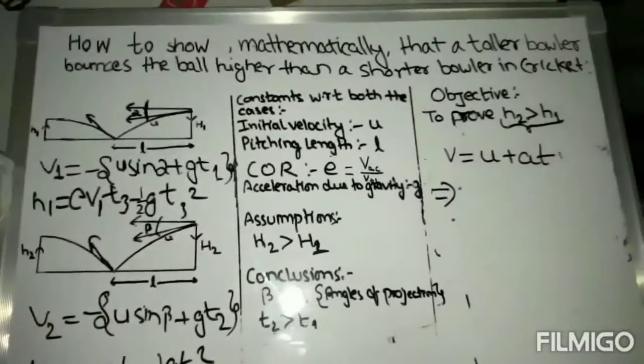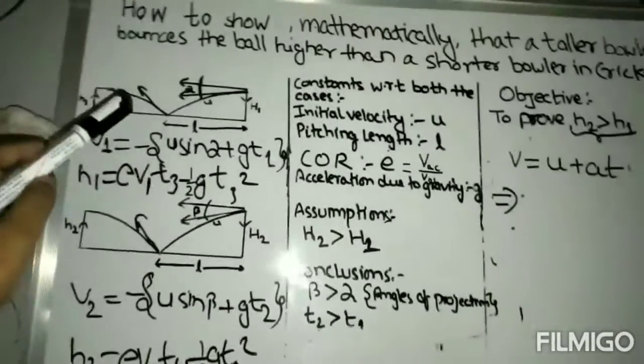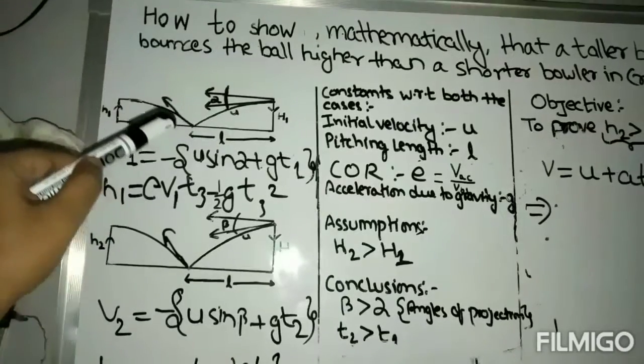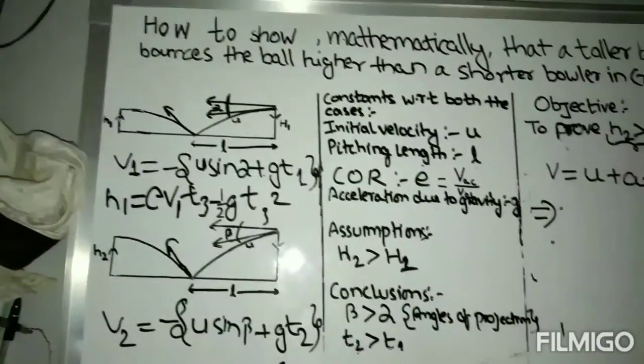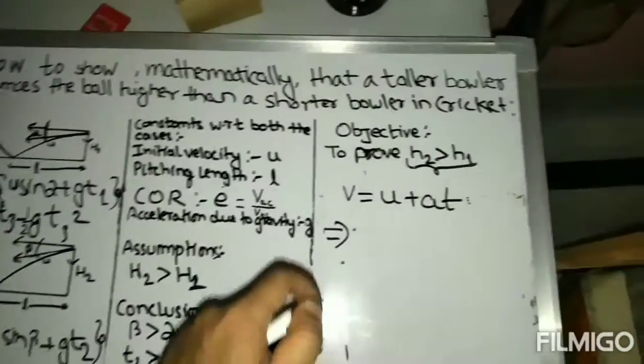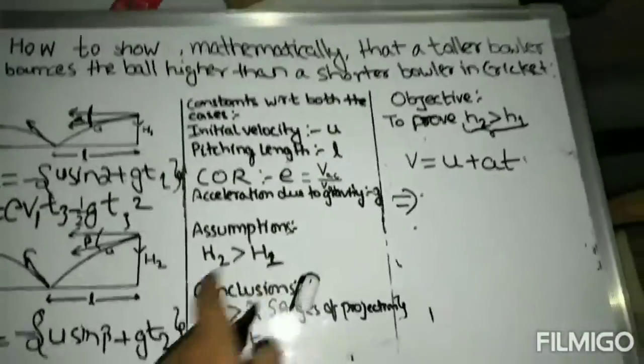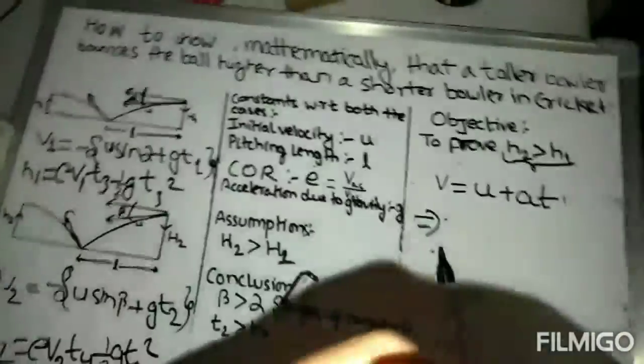Now our next step will be to derive the time that ball will take to reach its maximum bounce in both the cases. And for that we are going to need the first equation of motion again, which is v equals to u plus at.